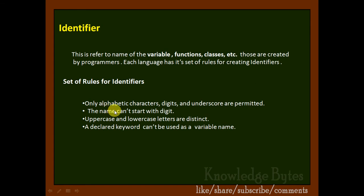Only alphabetic characters, digits, and underscore are permitted for creating identifiers in C++. This is rule number one. Rule number two: the name cannot start with a digit. For example, int a is allowed, but int 123 is not allowed. Also, int a_123 is allowed. We haven't discussed what int means yet—we will discuss it later. Just for understanding, int is a type.